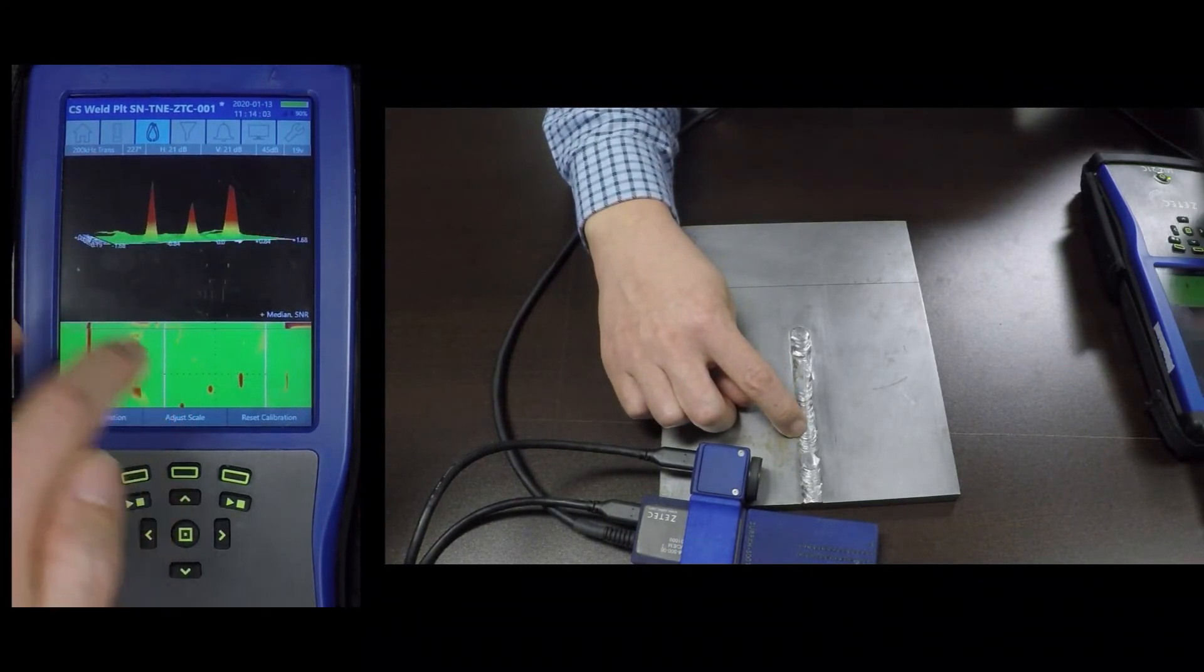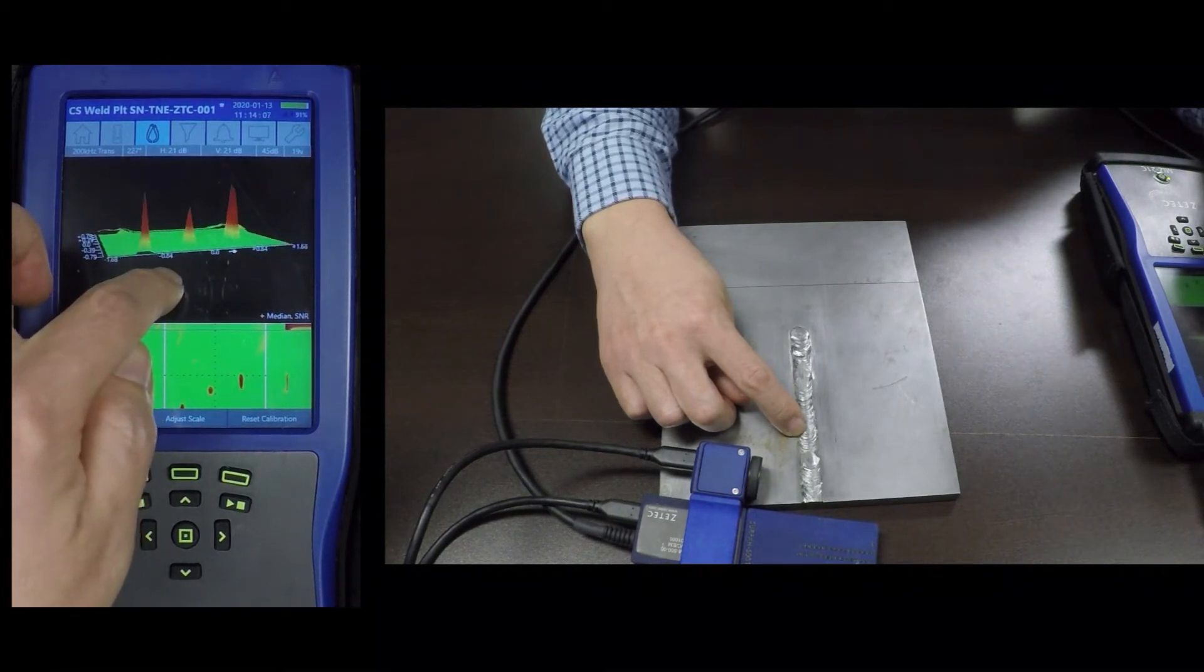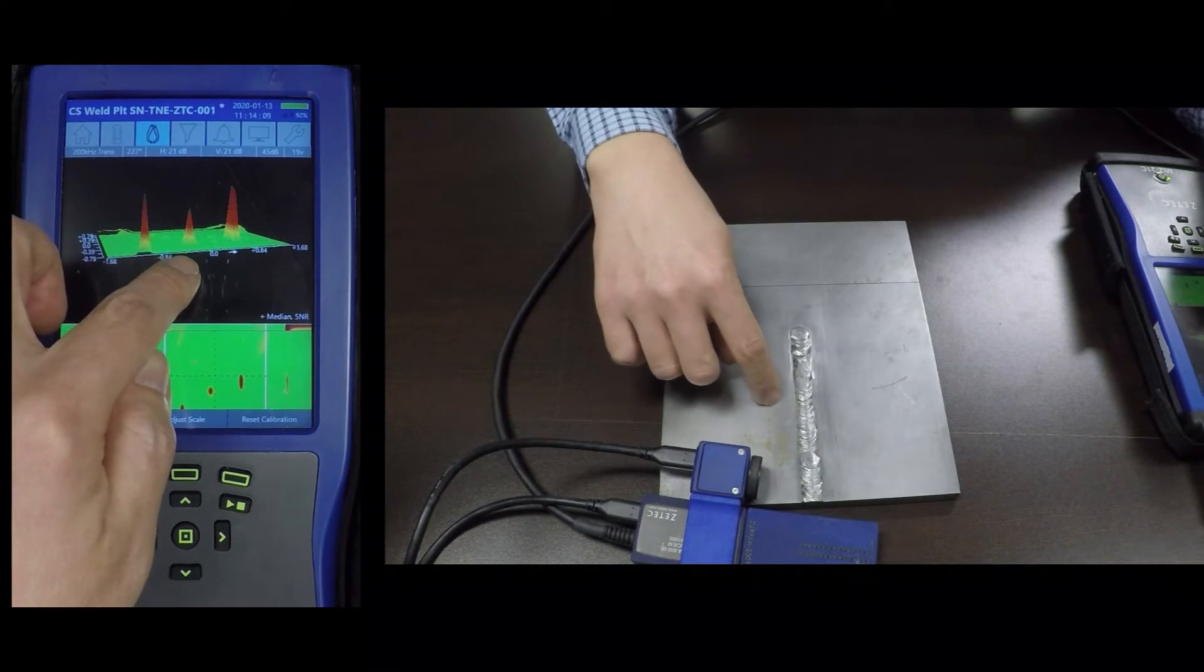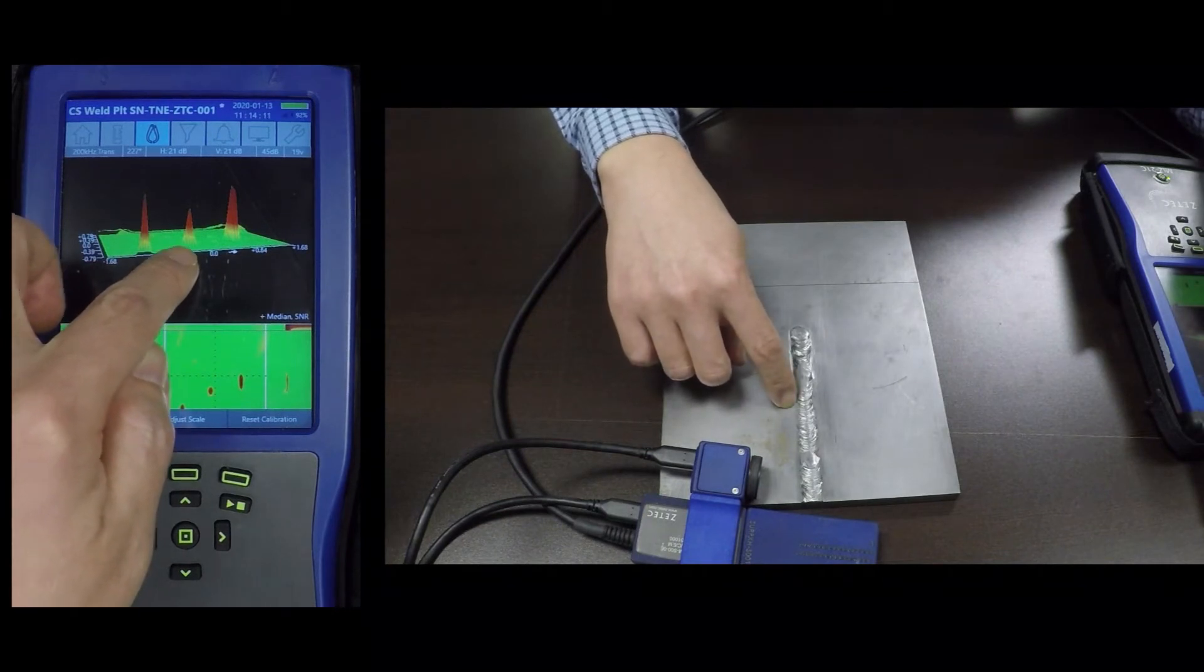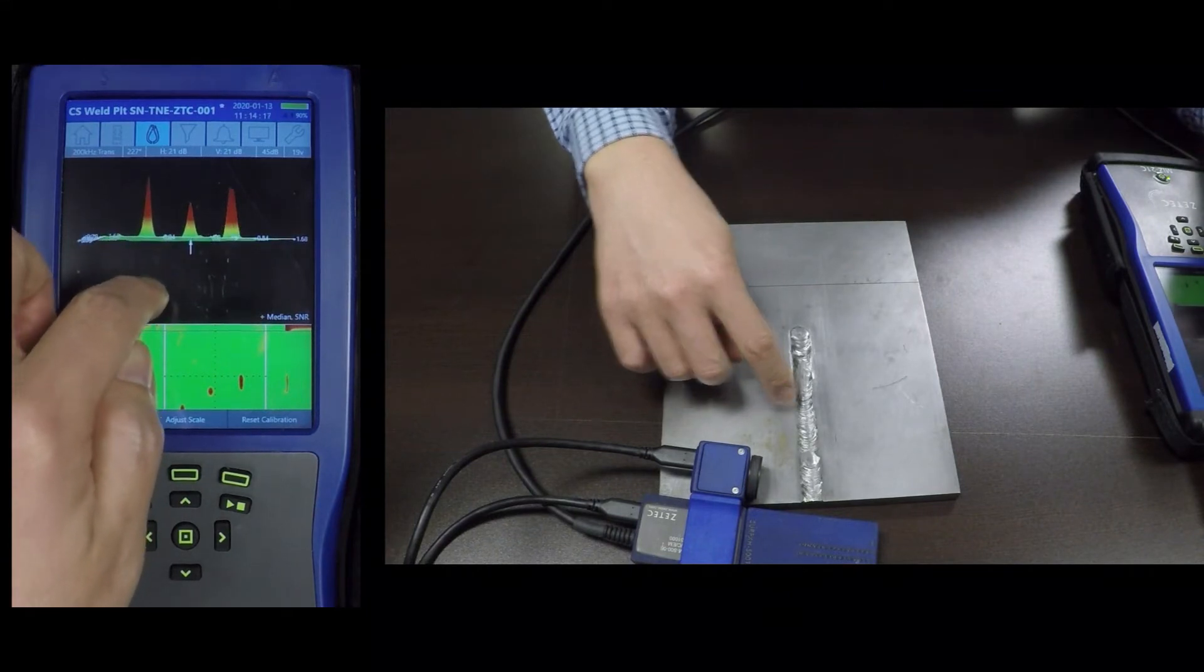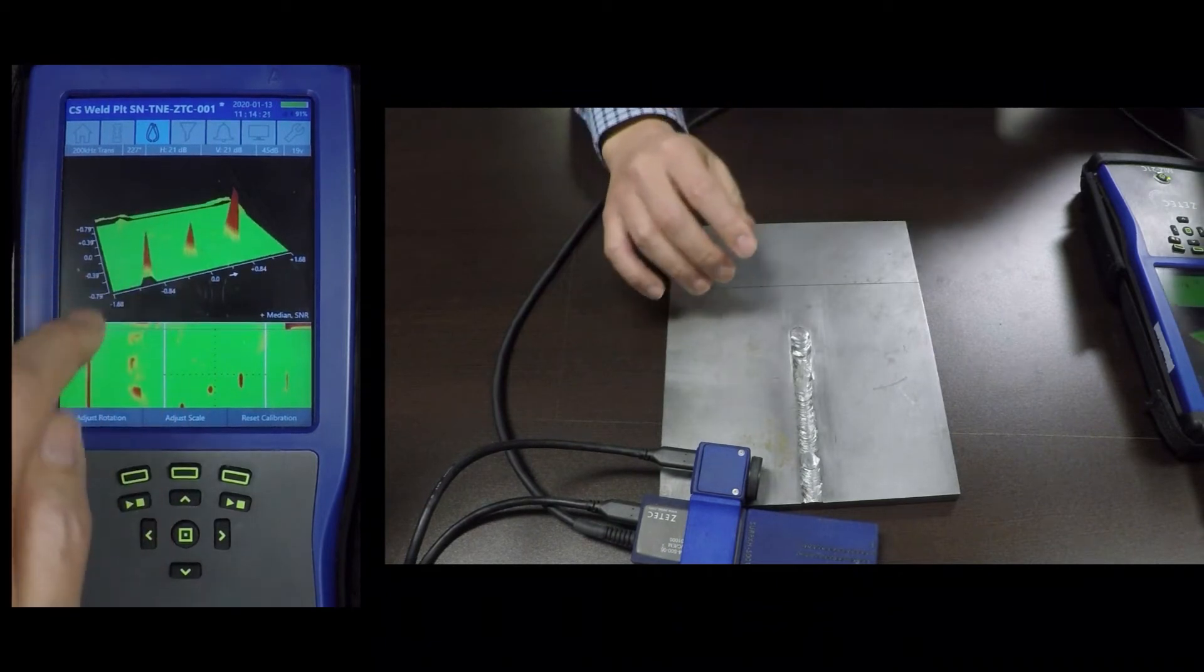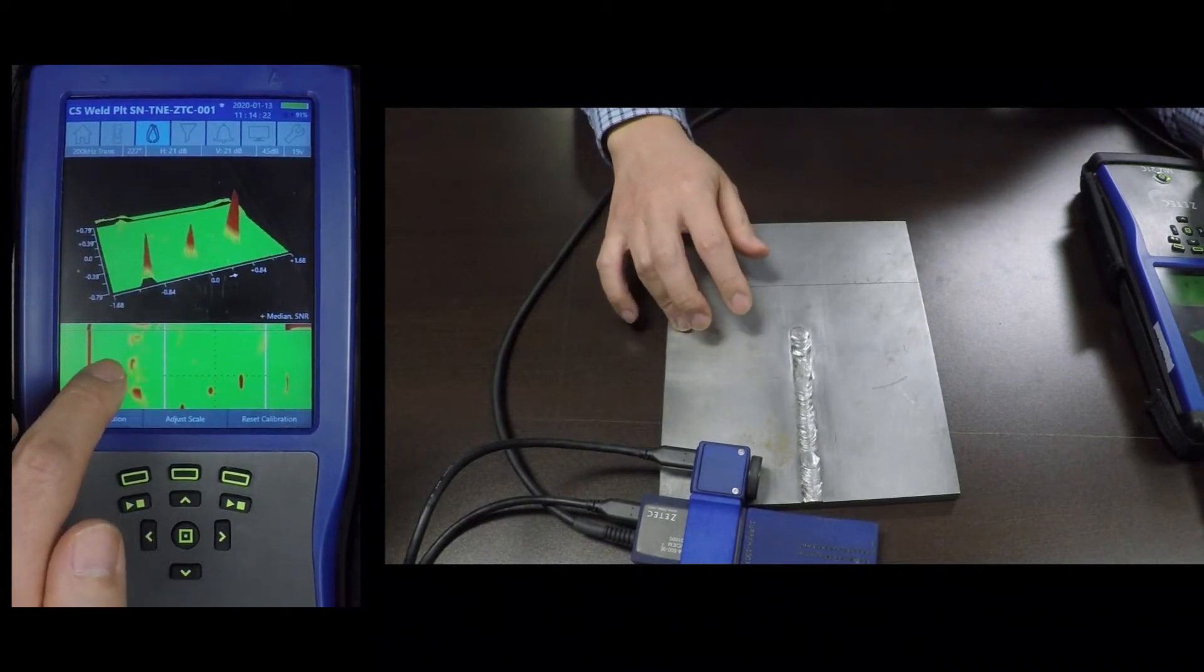And you can see if I look at the side view, I mean, it is picking out the flaw in the toe area pretty good. But you can see that the amplitude is reduced. So if the crown was higher, then you can see how that might be difficult to detect.